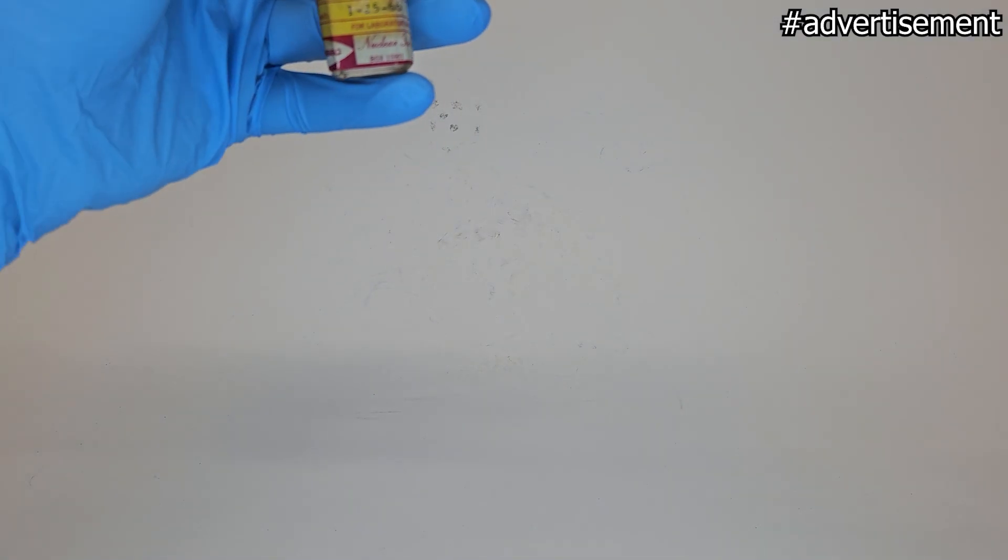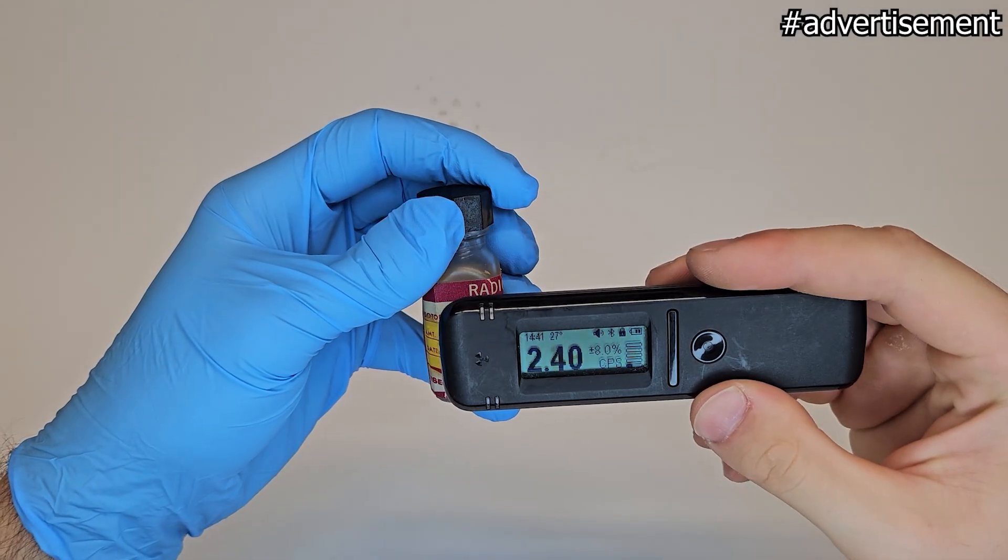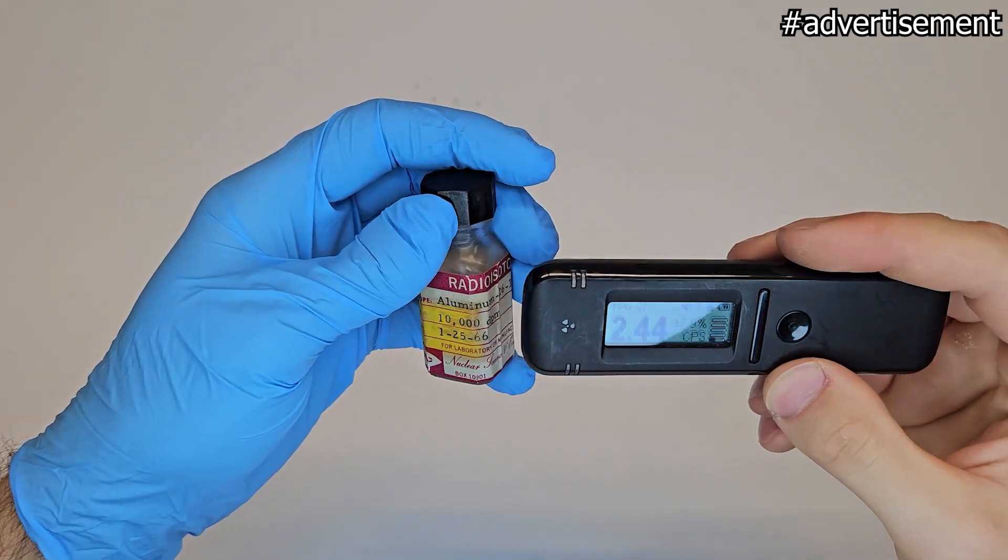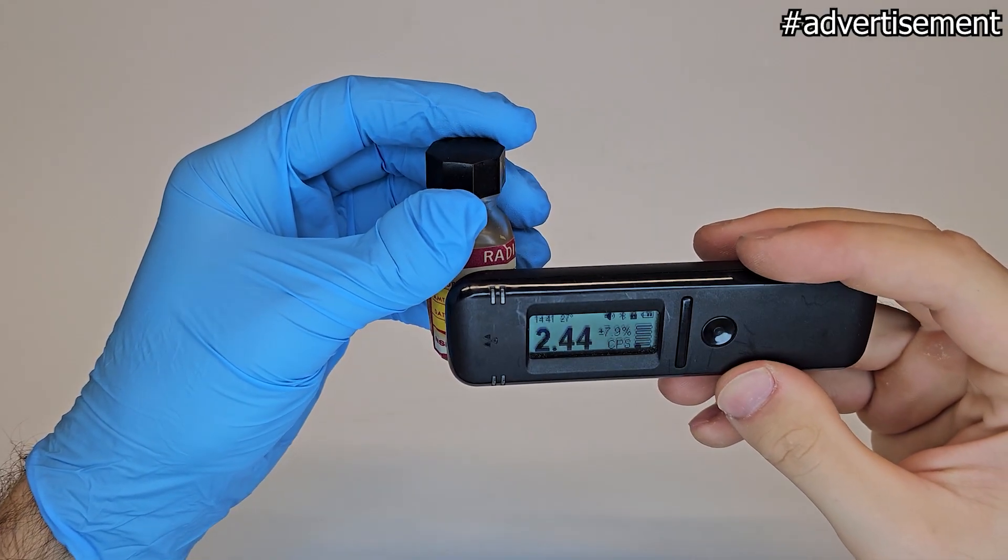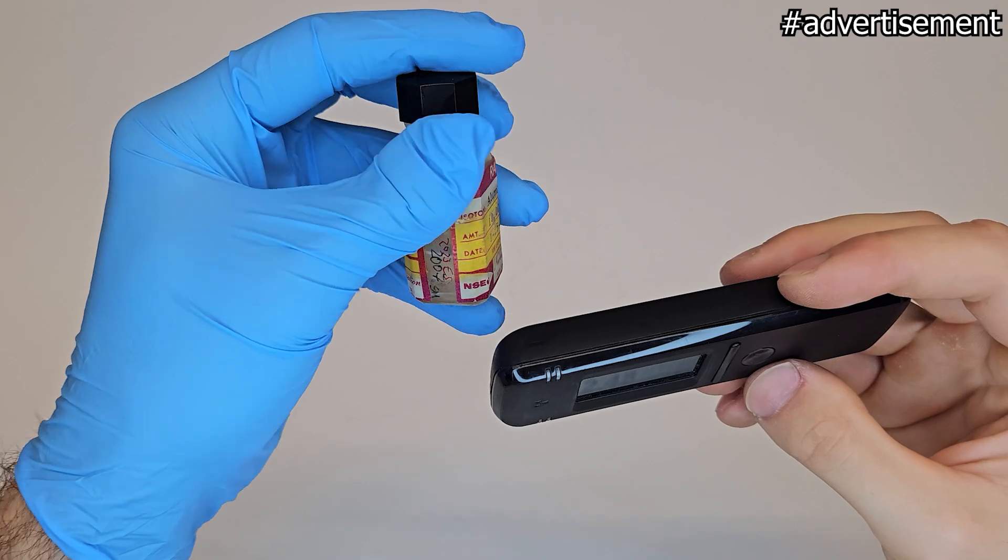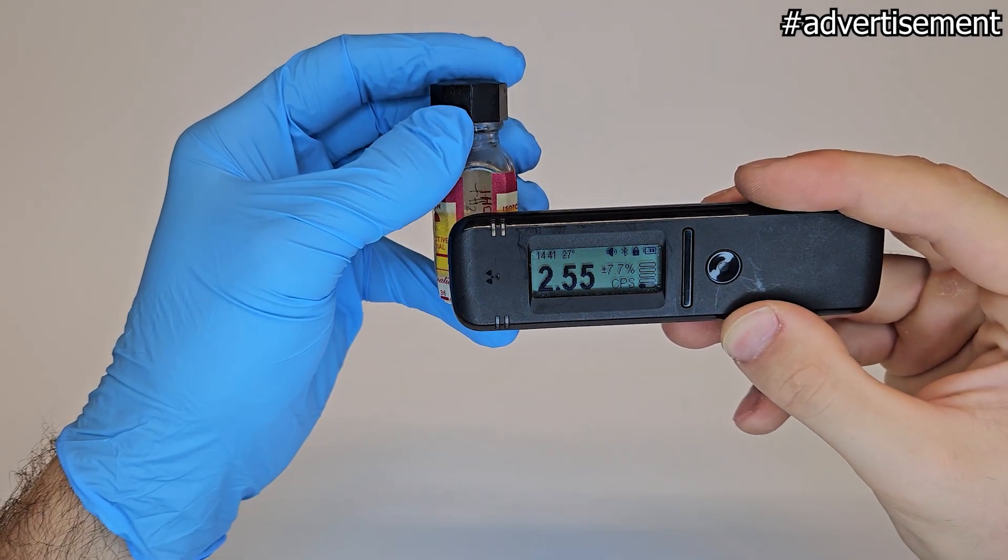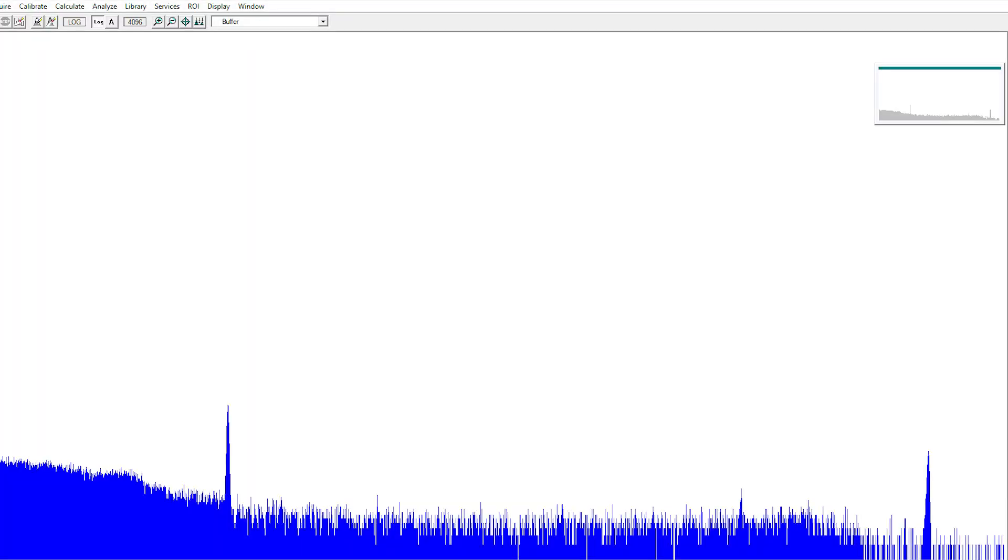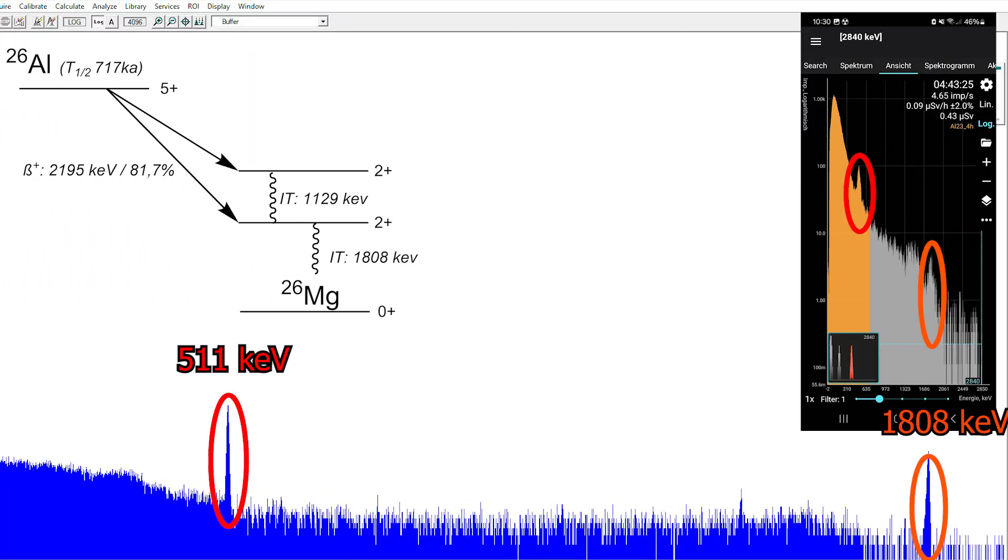Two gamma lines can be assigned to its decay. One at 1808 keV and the other one, less present, 1129 keV. Of course, we can measure this one with the Geely, but we can also measure it with the RadioCode 103. The RadioCode could not measure any increased activity per se, but with a long-term spectrum of 4 hours, we could detect everything we need to recognize. We can see the two gamma lines from the decay diagram here.